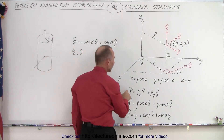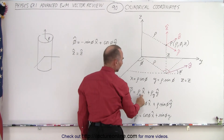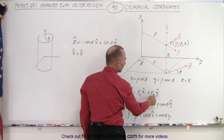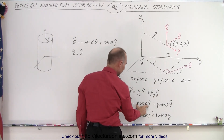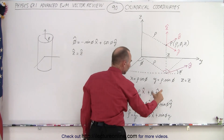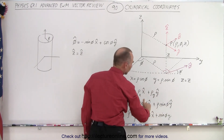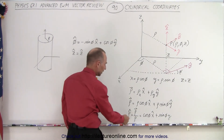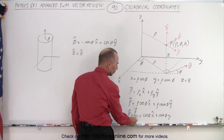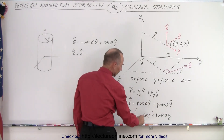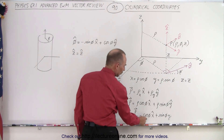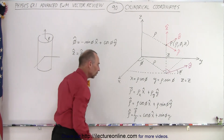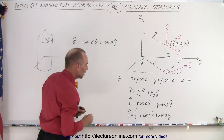To find the rho vector, it's simply the X and Y components: the X component in the X direction plus the Y component in the Y direction. That gives us rho cosine phi in X and rho sine phi in Y. If we want to take the unit vector, we divide the vector by its own magnitude, which eliminates the rho. So the unit vector in the rho direction is cosine of phi in the X direction plus sine of phi in the Y direction. Rho is the radial distance from the Z axis to any point in space.